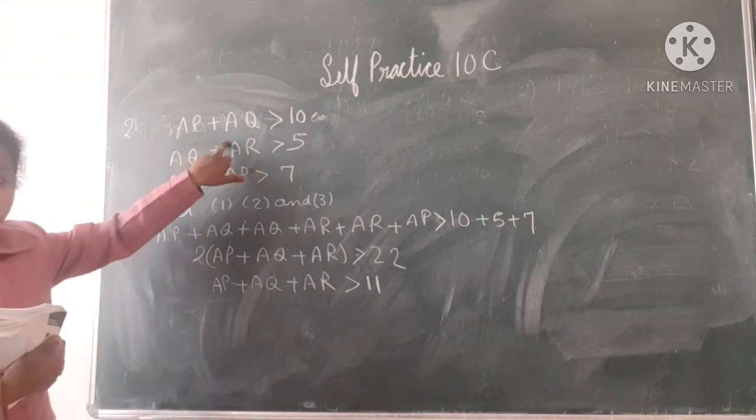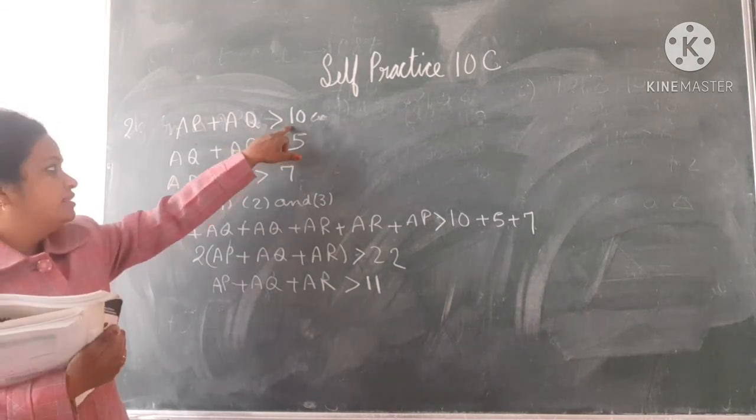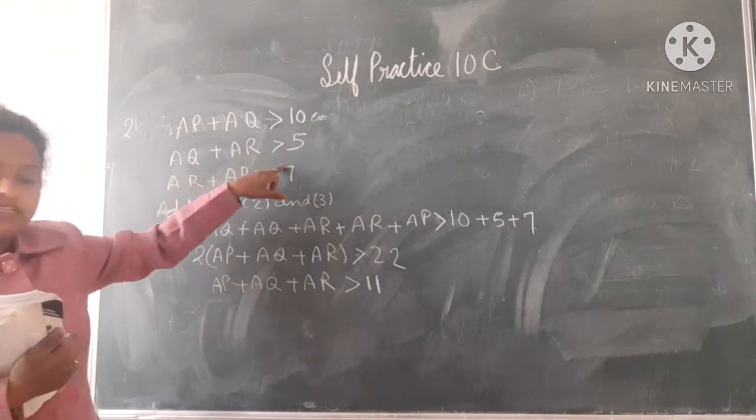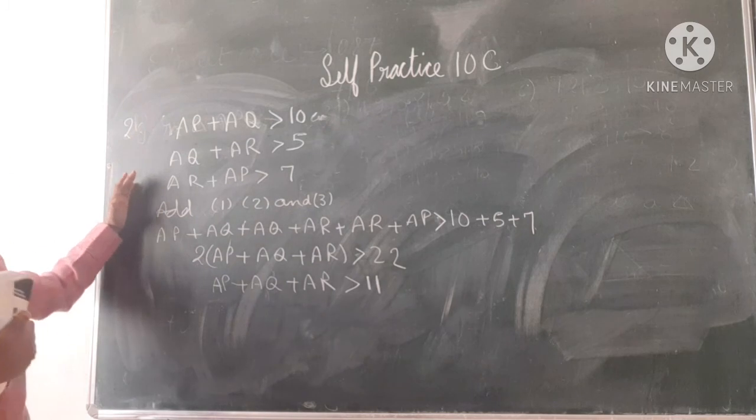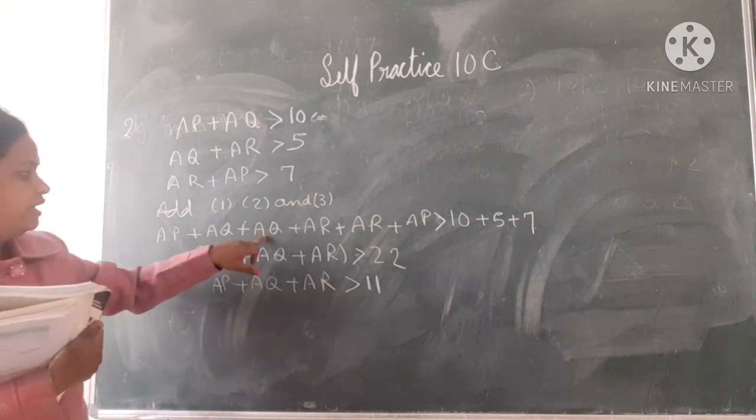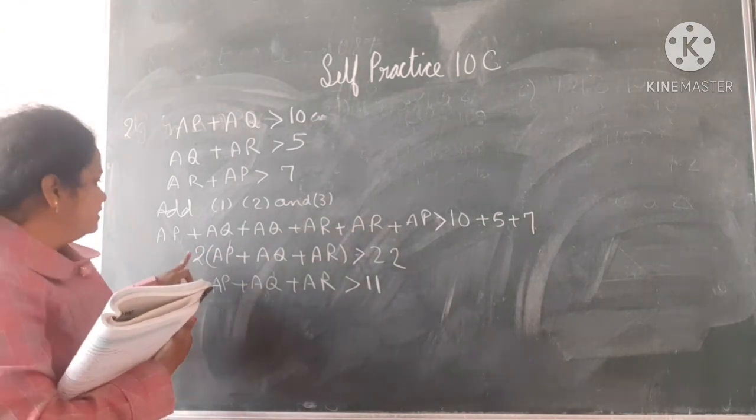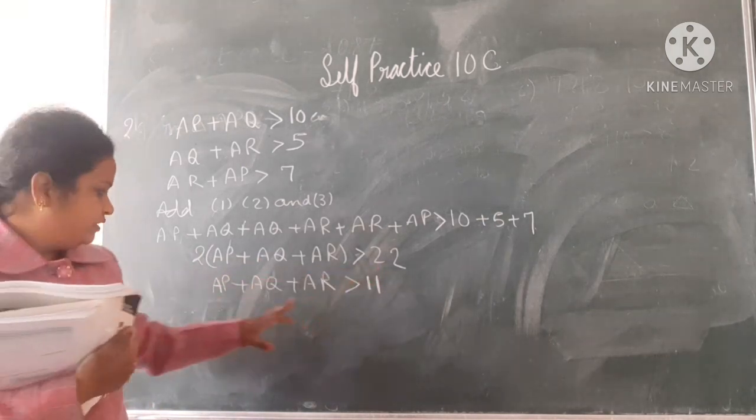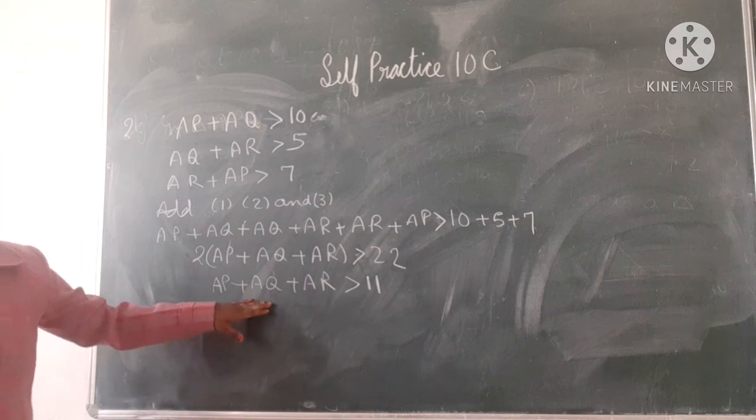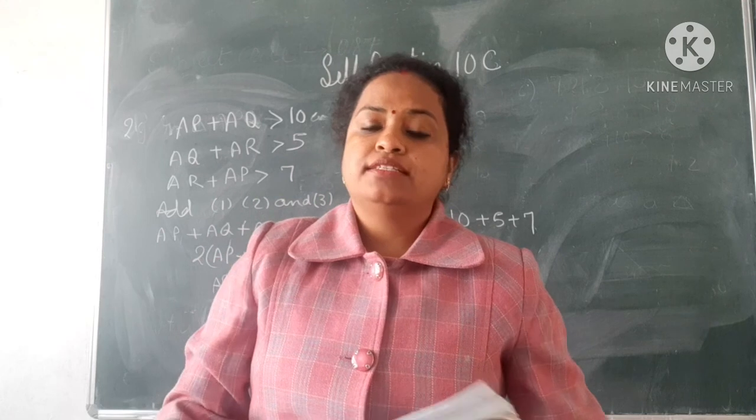See, AP plus AQ means two sides is equal to the sum of the, or greater than the third side. This is greater than 10. AQ plus AR greater than 5. AR plus AP greater than 7. If you add all these three, you will get AP plus AQ, AQ plus AR, AR plus AP, that is 10 plus 5 plus 7. So here you will get two times AP, AQ, AR, that is greater than 22. So at last, AP plus AQ plus AR will be greater than 11. Thank you students, that's all for today and have a good day. Thank you.